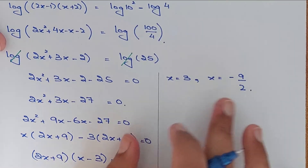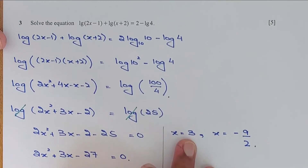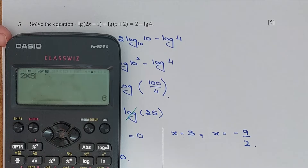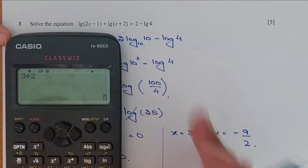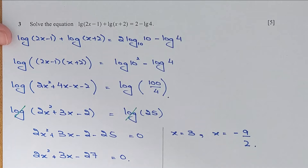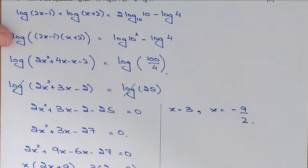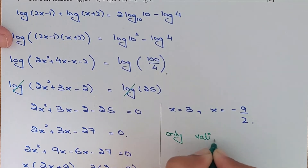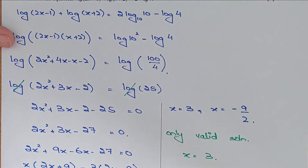Let's check which solution is valid. For x equals 3: log(2 times 3 minus 1) and log(3 plus 2) are both positive — valid. For x equals minus 9/2: 2 times minus 9/2 minus 1 equals minus 10, and log of minus 10 does not exist. So the only valid solution is x equals 3.